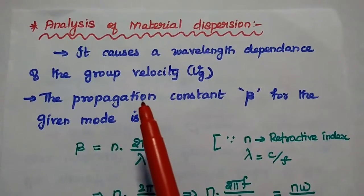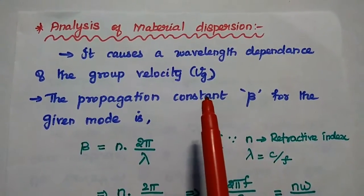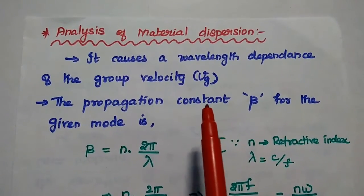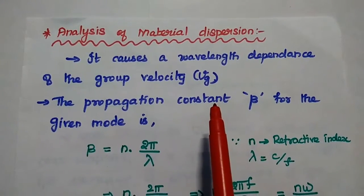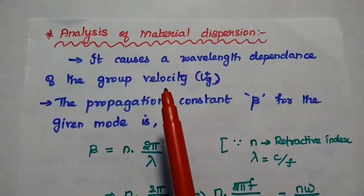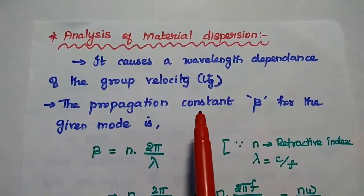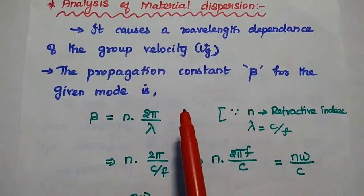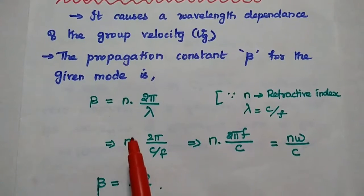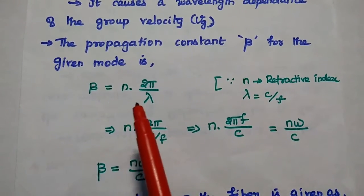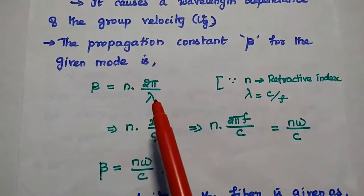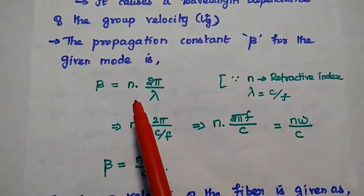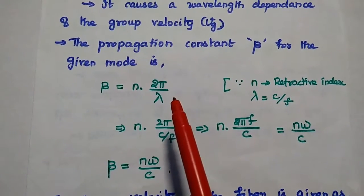Next, we are going to analyze material dispersion. Material dispersion occurs when the variation of refractive index is a function of wavelength. Material dispersion causes a wavelength dependence of the group velocity. To relate the propagation constant with the group velocity, we consider the propagation constant beta equal to 2π/λ. Taking the refractive index of the core material into account, beta is equal to n times 2π/λ, where n is the refractive index n1 of the core material.